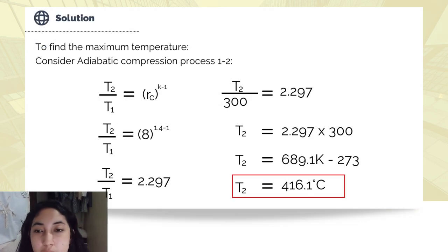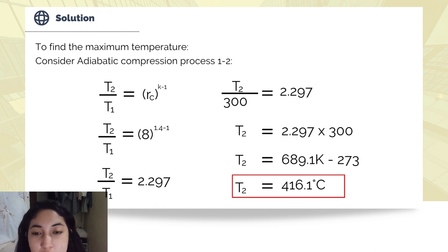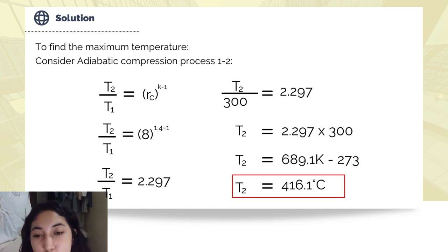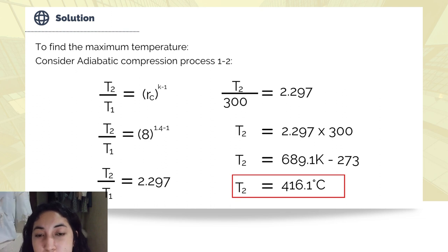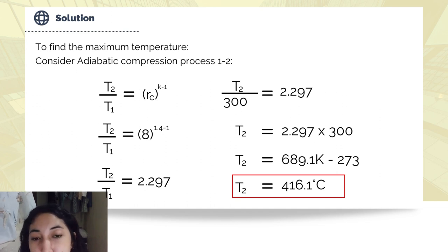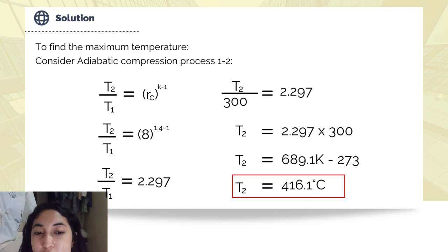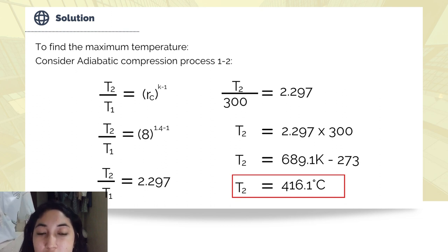First, we find the temperature at state 2 by considering the adiabatic compression from state 1 to state 2. Using T2 over T1 equals the compression ratio raised to K minus 1: 8 raised to 1.4 minus 1 equals 2.297. Substituting T1 of 300 Kelvin, T2 equals 2.297 times 300, which equals 689.1 Kelvin, or 416.1 degrees Celsius.